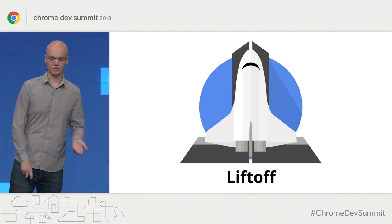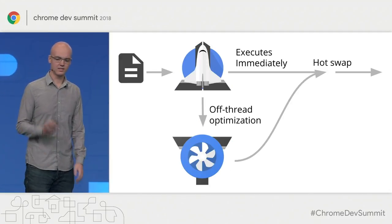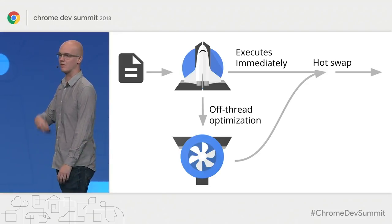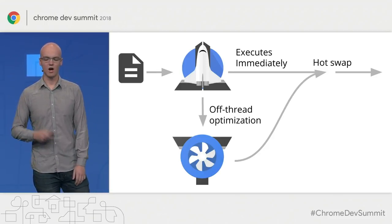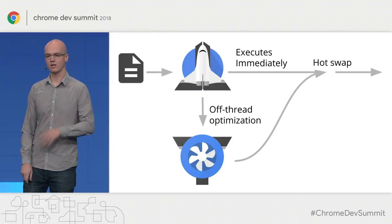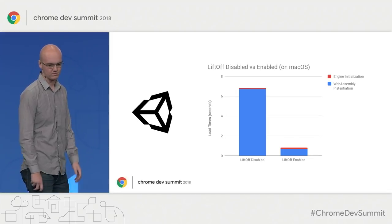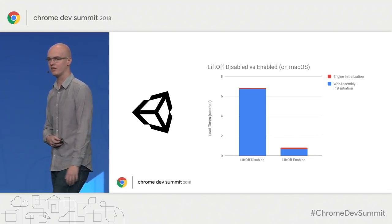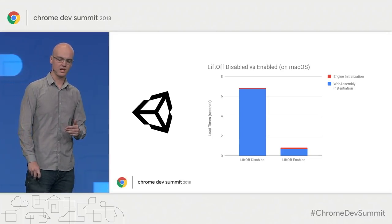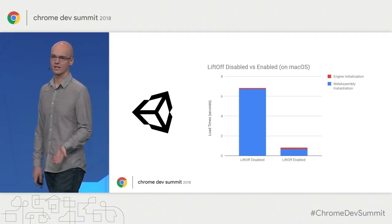To make startup time even faster, the team built and launched an entire new compiler that we call the Liftoff compiler. This Liftoff compiler takes the WebAssembly bytecode that comes down off of the wire and starts executing it immediately. The WebAssembly module is then taken off the main thread and optimized further by the TurboFan optimizing compiler. When TurboFan is done, it's hot-swapped in directly without any need for explicit developer action. Unity found that a large game went from seven seconds to less than one second to load.